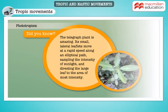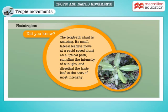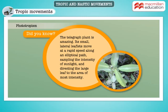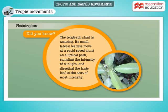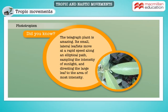The telegraph plant is an amazing plant. Its small lateral leaflets move at a rapid speed along an elliptical path, sampling the intensity of sunlight and directing the large leaf to the area of most intensity.